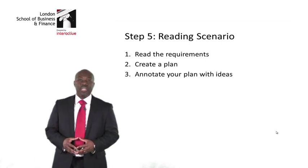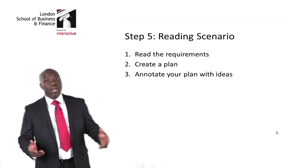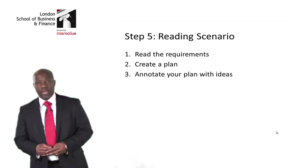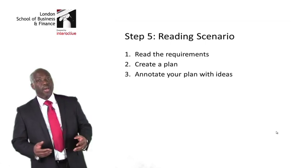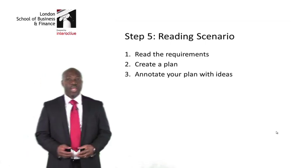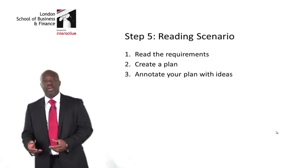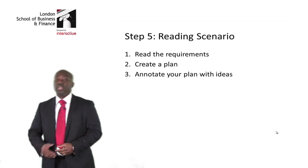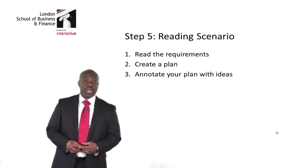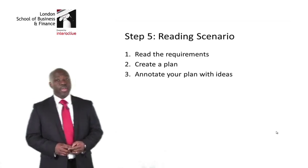The B part of the question is asking me to calculate EVA. EVA means I need to create a plan: I know I need to calculate NOPAT, and I need to be able to calculate economic capital employed.